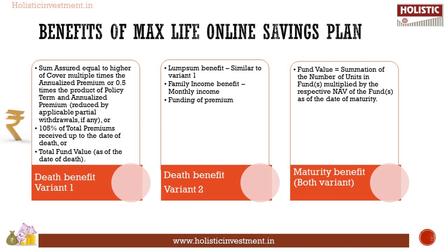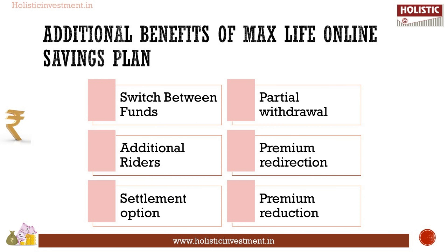Maturity Benefit: On maturity, you will be eligible to receive the fund value, where the fund value will be calculated as the summation of number of units multiplied by the respective NAV of the fund as of the date of maturity. Additional benefits under MaxLife Online Savings Plan include Fund Switching, Premium Redirection, Partial Withdrawal, Settlement Option, and Additional Rider Benefit.